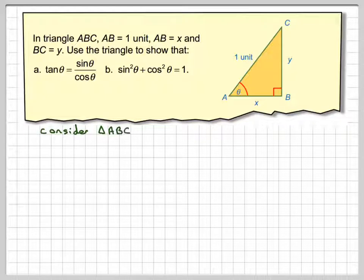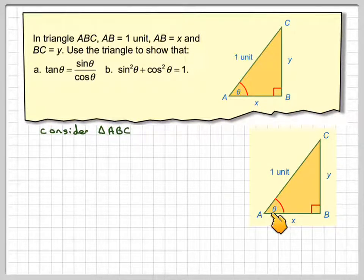Consider the triangle. If this is the angle, this would be the opposite side, and this would be the adjacent. This would be the opposite, and this would be the hypotenuse. It's very important that this is one unit.